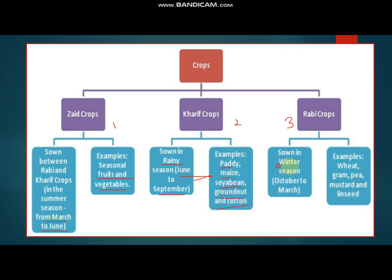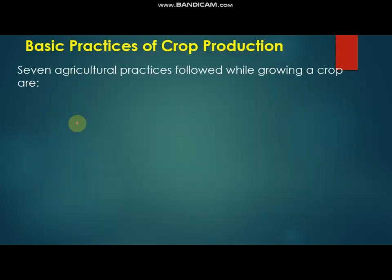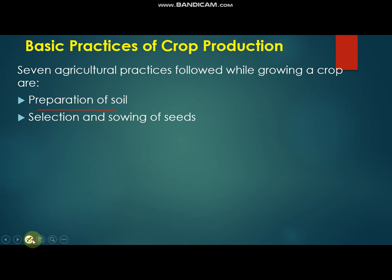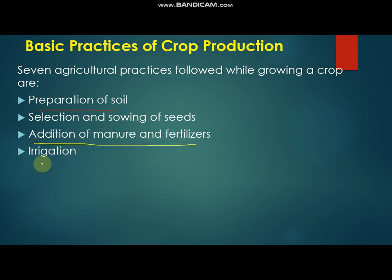Rabi crops are grown in the winter season from October to March; examples include wheat, gram, pea, mustard, and linseed. There are 7 basic agriculture practices followed while growing crops: preparation of the soil, which is the first step where we prepare the soil for crop production, and selection and sowing of seeds, where we select good quality seeds and sow them in the field using proper scientific methods.